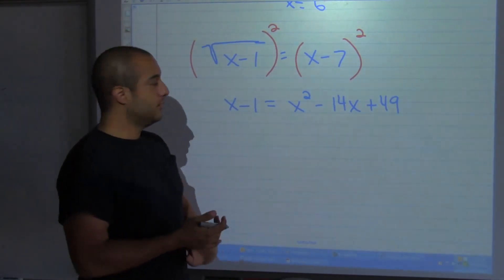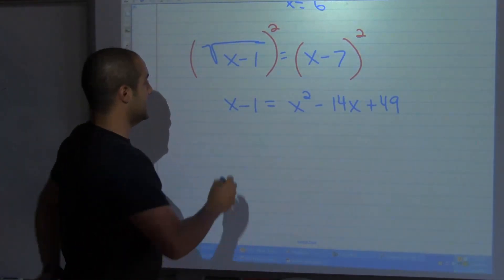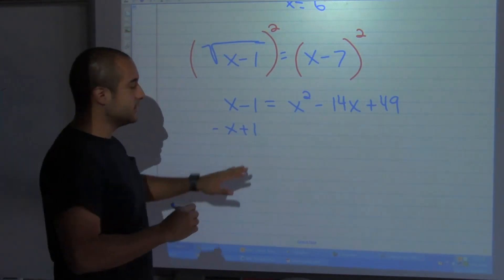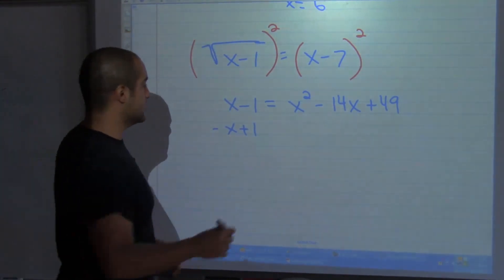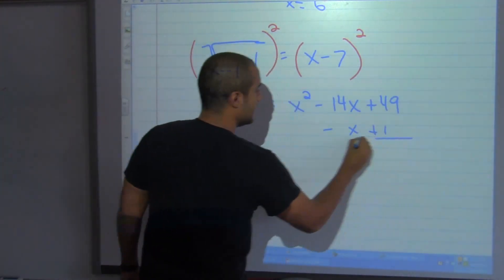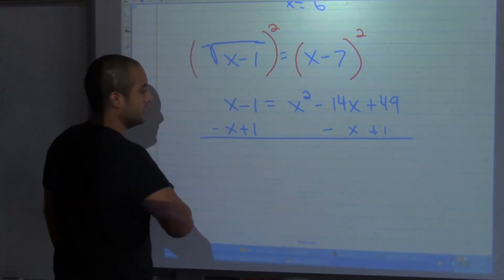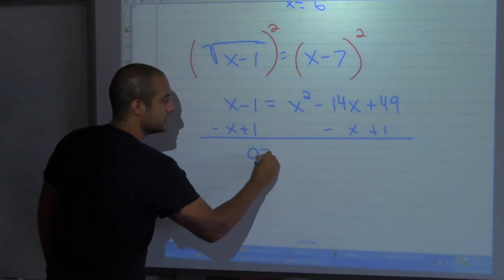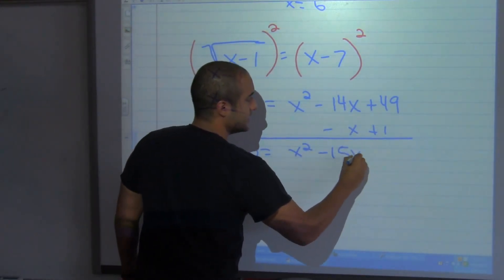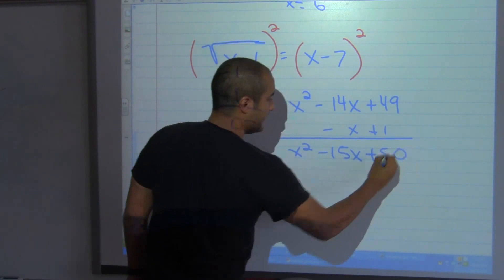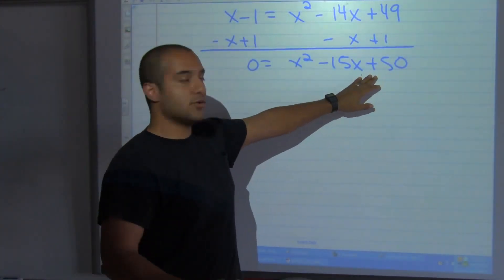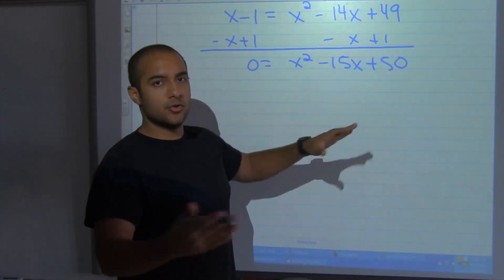Now I'll move everything to one side: subtract x and add 1 — I'm moving two things at the same time, which is fine if you're comfortable with that. So I have 0 equals x squared minus 15x plus 50. I have a quadratic equation, so now I need to solve it whichever way you want.